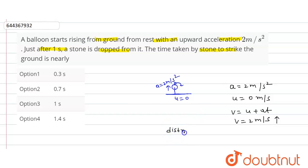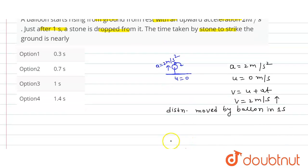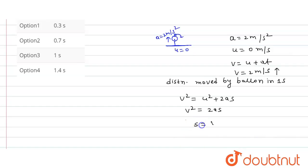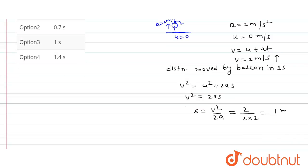The distance moved by the balloon in one second: using v² = u² + 2as, since u equals zero, v² = 2as. So s = v²/(2a) = (2)²/(2×2) = 1 meter. Hence the stone is 1 meter above the ground when dropped.